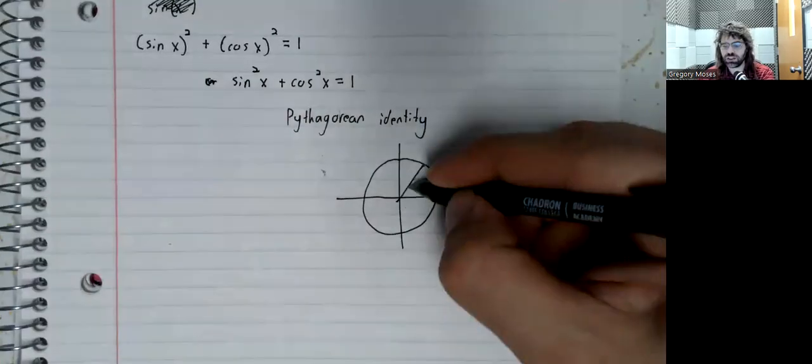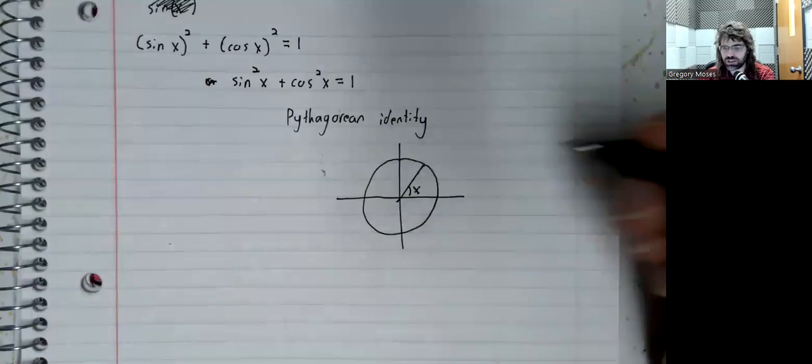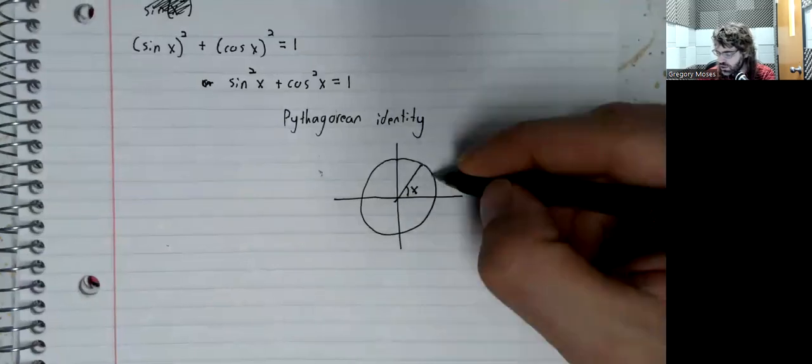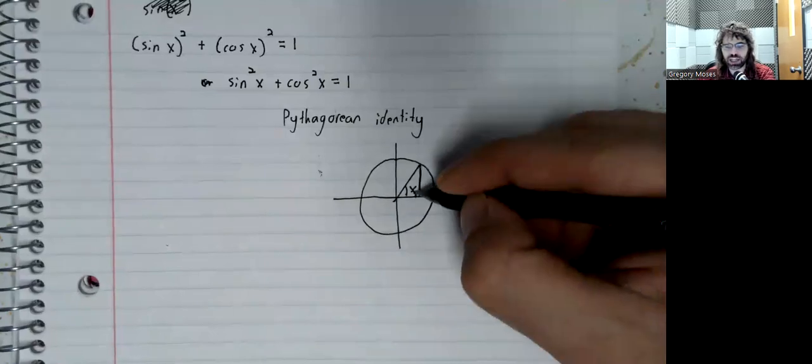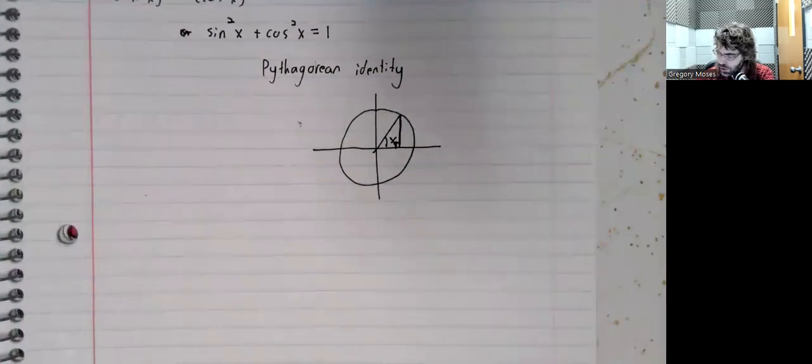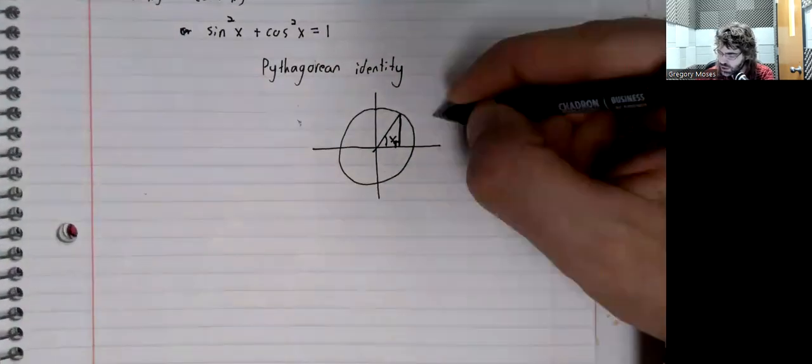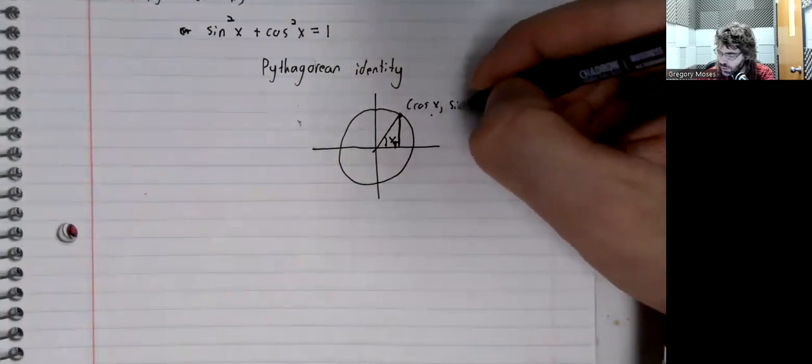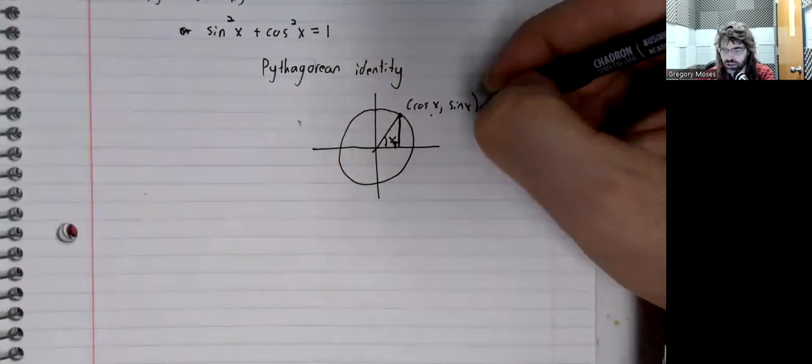If we create a right... if we have this angle x, and we create a right triangle, like so, this point here is the cosine of x, comma the sine of x.